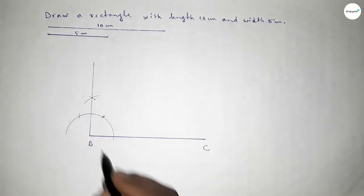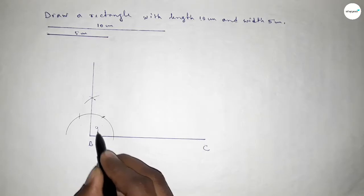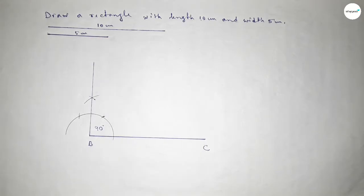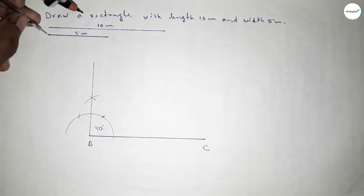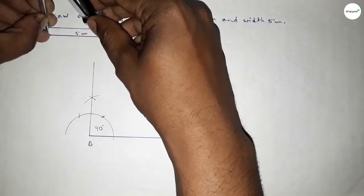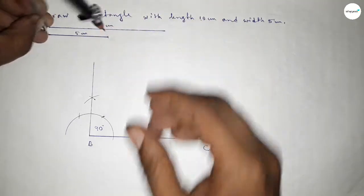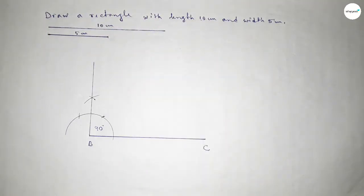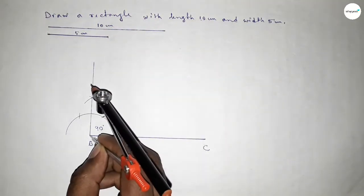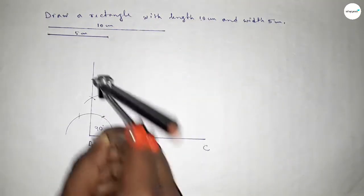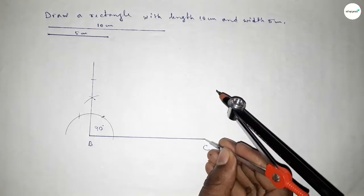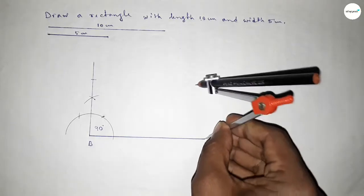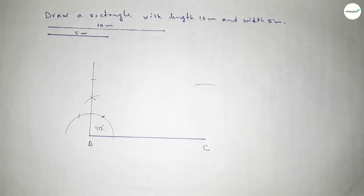Checking — this is a perfectly 90 degree angle. Now taking the length 5 centimeter by using the compass, putting the compass here and cutting here, then putting the compass here and drawing an arc.